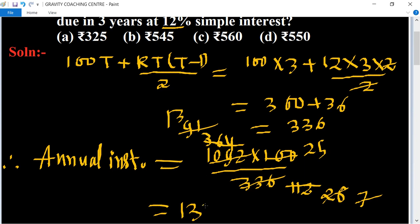13 times 25 equals 325, which is the required answer. So option A is the correct answer.